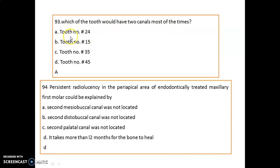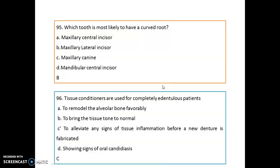Which tooth would have two canals most of the time? That is tooth number 24, the maxillary first premolar. If there is a persistent radiolucency in the periapical area of an endodontically treated maxillary first molar, it can be because the periapical lesion may take time to heal — around 12 months for the bone to heal completely for complete opacity.